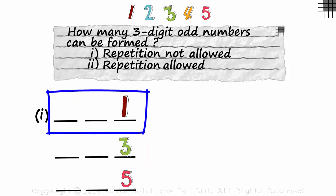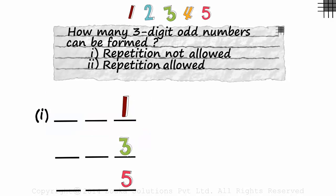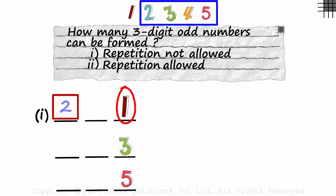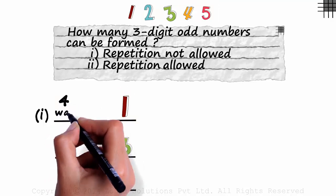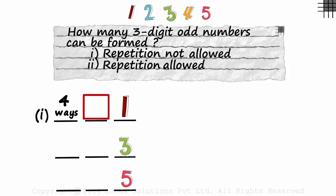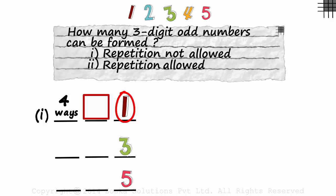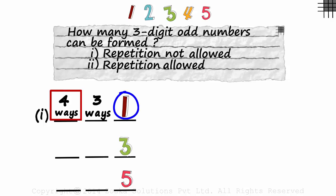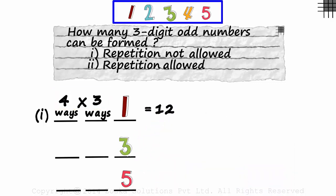Now focus on the first possibility: the number ends with a 1. In how many ways can we fill the hundreds slot? The digit 1 is gone, so the hundreds place can be filled with any one of the remaining four digits: 2, 3, 4, or 5 — four ways. What about the tens slot? The digit 1 is gone and another digit is used in the hundreds place, so only three digits remain. The tens slot can be filled in three ways. As we are filling the first and second slot, we multiply: 4 × 3 = 12. There are twelve ways to form a three-digit number with 1 as its units digit.